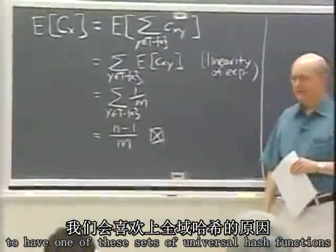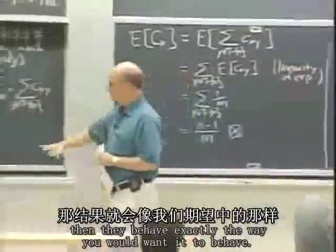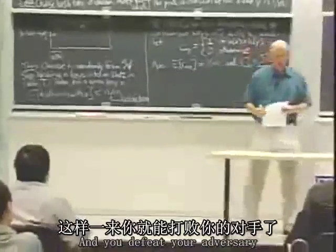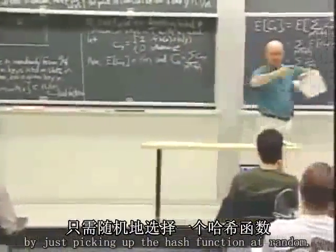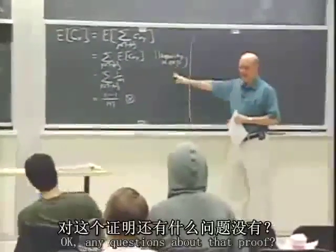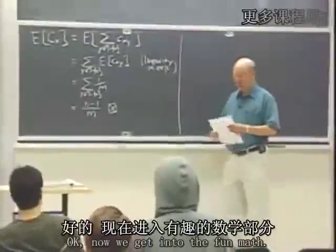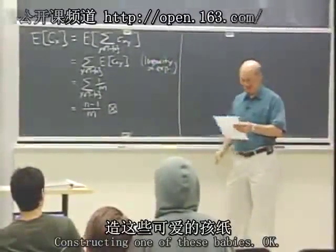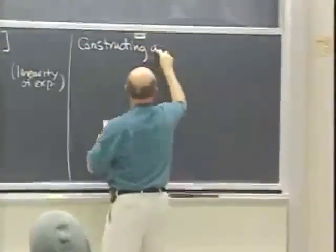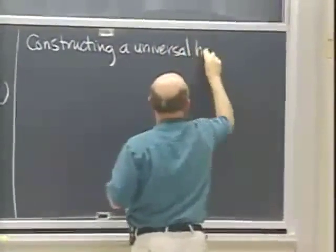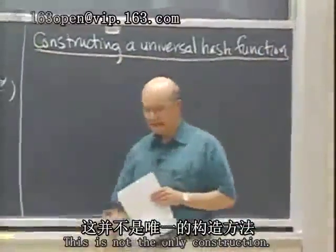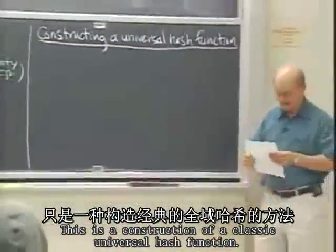If you have universal hash functions, then they behave exactly the way you want them to. And you defeat your adversary by just picking the hash function at random — there's nothing he or she can do. Any questions about that proof? Now we get into the fun math — constructing one of these. This is not the only construction; this is a construction of a class of universal hash functions, and there are other constructions in the literature. This one works when m is prime — when the number of slots is a prime number.